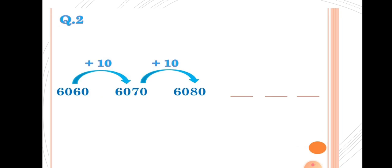Second question: 6060, 6070, 6080. From the first number to the second number, what is the difference? The difference is 10. Very good. From 6070 to 6080, increase by 10. So students, we have to add 10 to get the next number.